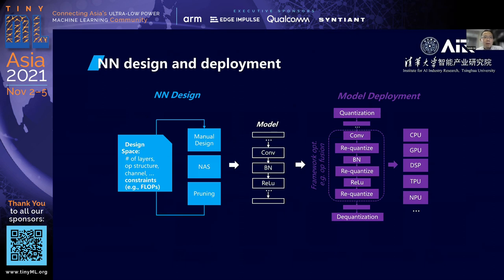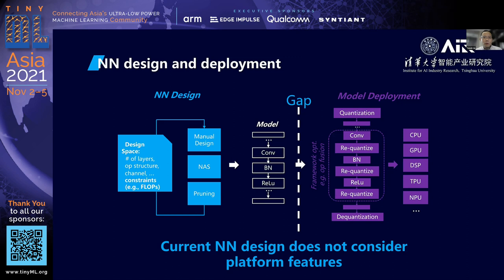This is how people design and deploy models today. For model design, we start from a design space with different numbers of layers or operator types. We either manually design a model or leverage automation tools like neural architecture search. Then we deploy that model onto hardware. However, there is a gap — current neural network design does not consider the platform features very much. Usually people use constraints like FLOPs — the number of computations — to limit model size and achieve good performance.